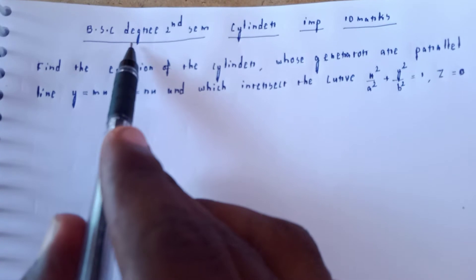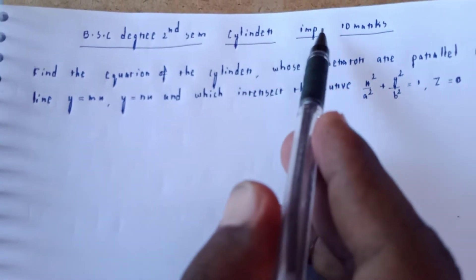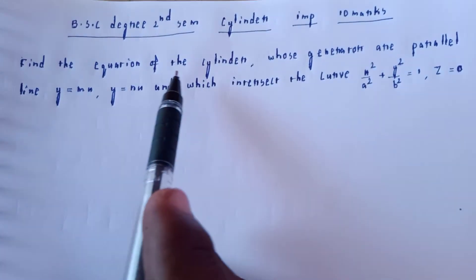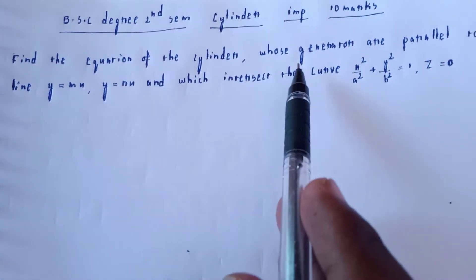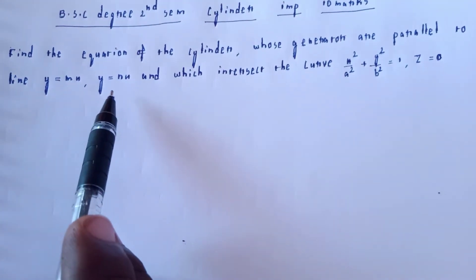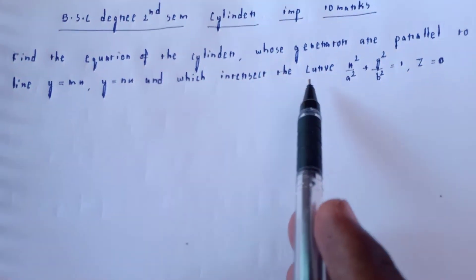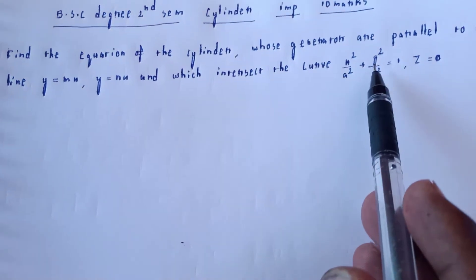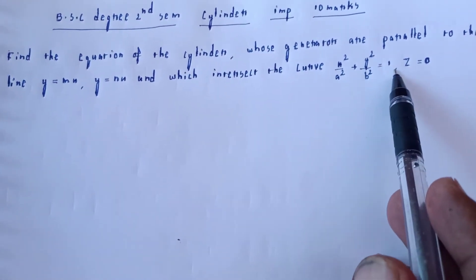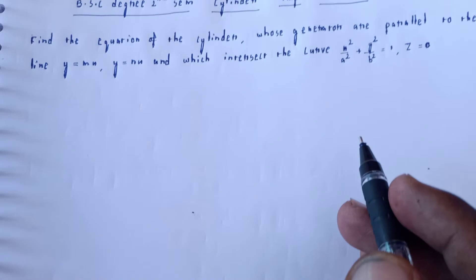Welcome to my channel. BSc degree, seconds and cylinder. Find the equation of the cylinder whose generators are parallel to the line y equal to mx, y equal to nx, and which intersect the curve x squared by a squared plus y squared by b squared equal to 1. This is the ellipse, z equal to 0.